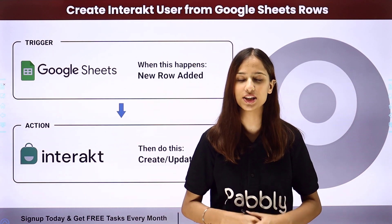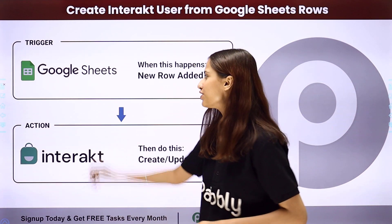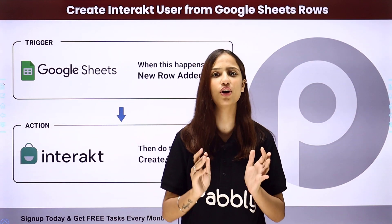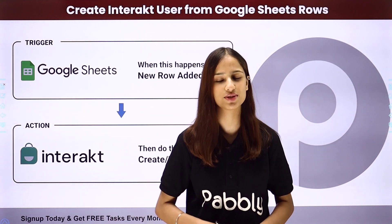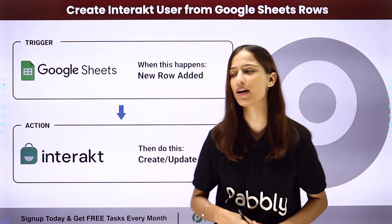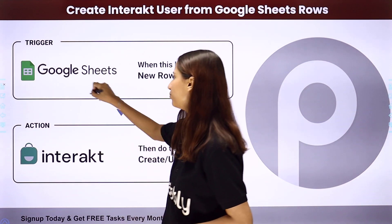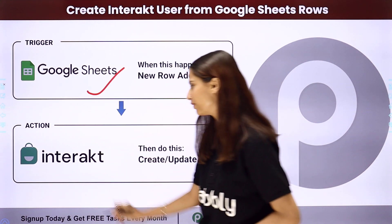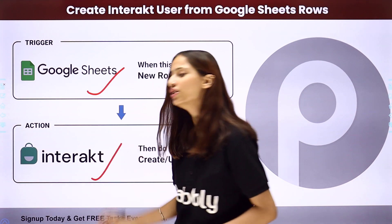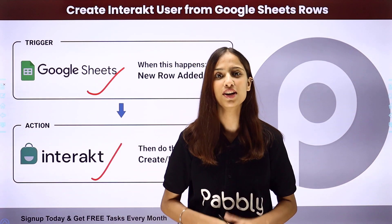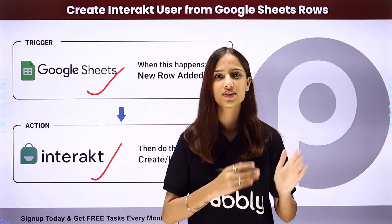To do this I need to build an integration between these two applications, for which I will be using Pabbly Connect, where my trigger application will be Google Sheets and my action application will be Interact. To learn more about this, follow me through the screen.